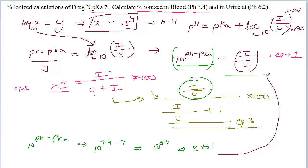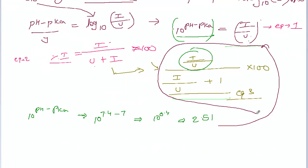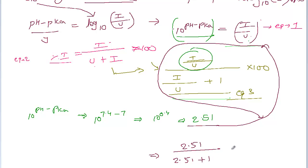Now let's plug that into equation 3. Ionized over unionized is 2.51, so: 2.51 divided by (2.51 plus 1) times 100 gives a value of 71.5. So the percent ionized in blood for drug X is 71.5%.